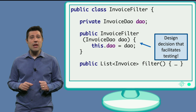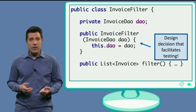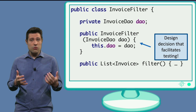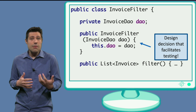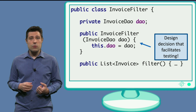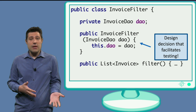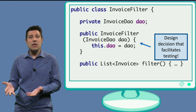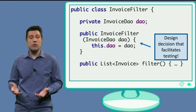So instead of instantiating the database class directly, we then received it via constructor, because this enabled us to use mocks during the test and to pass the real implementation when the software runs for real.